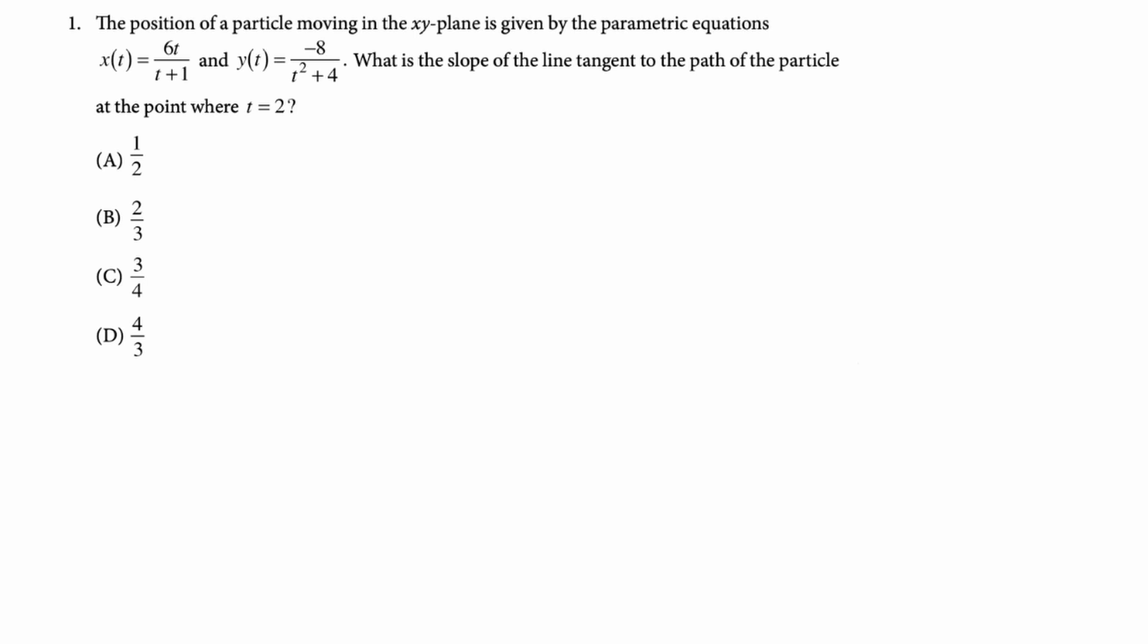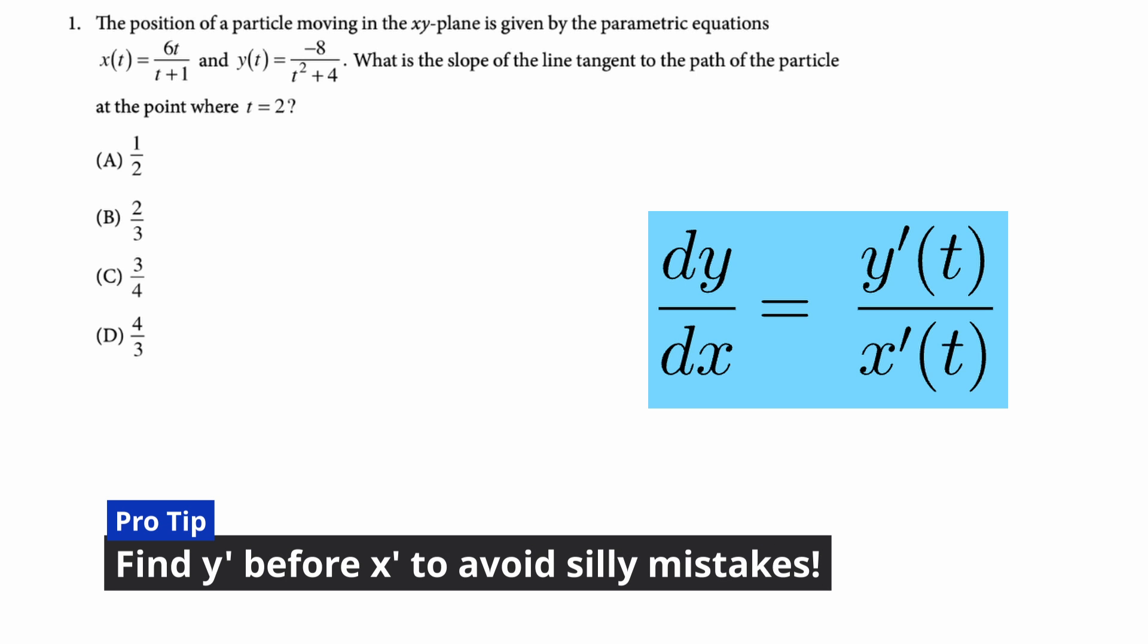Number one, the position of a particle moving in the XY plane is given by the parametric equations. X of t is 6t over t plus 1. Y of t is negative 8 over t squared plus 4. What is the slope of the line tangent to the path of the particle at the point where t equals 2? So my standard advice with this is to find y prime first and then find x prime because you're definitely just going to divide the first thing by the second thing.